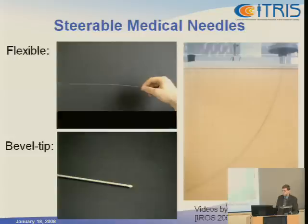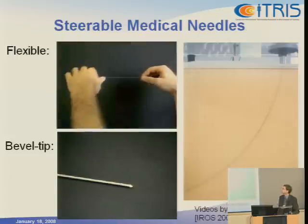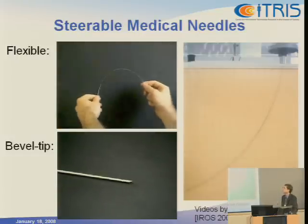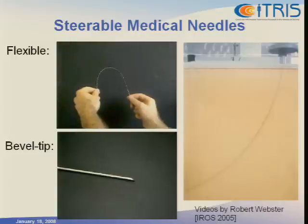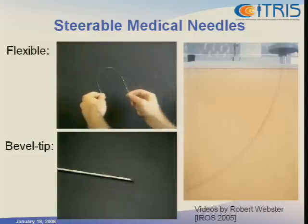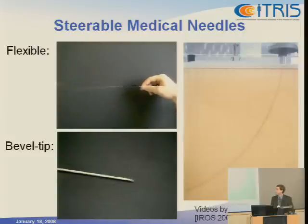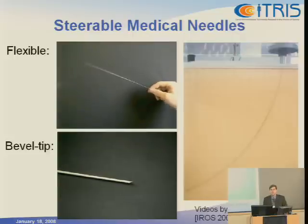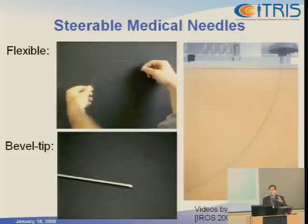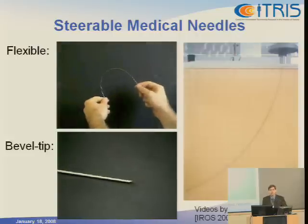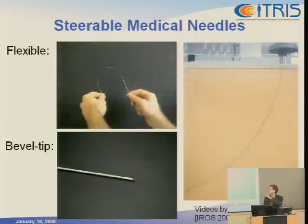For cases like that, we've been working with a group at Johns Hopkins University with Allison Okamura, developing a new type of needle — a steerable medical needle — that has two key properties. The first is that it's flexible, and the second is that it has a bevel tip. The bevel tip means that as it's being inserted into soft tissue, it exerts asymmetric forces on the surrounding soft tissue, and because it's flexible, it will bend in the direction of the bevel.